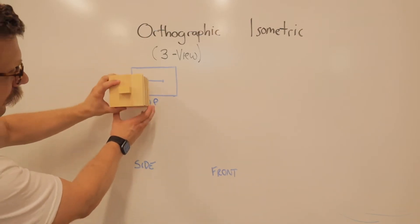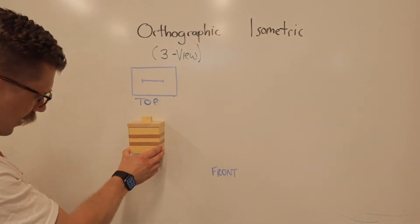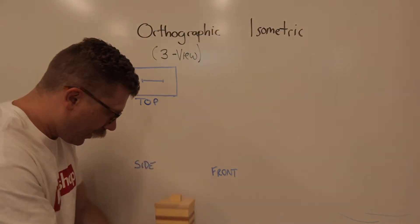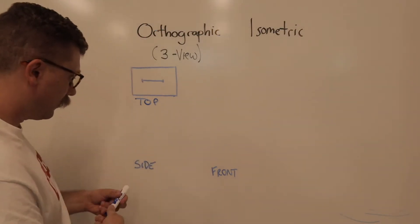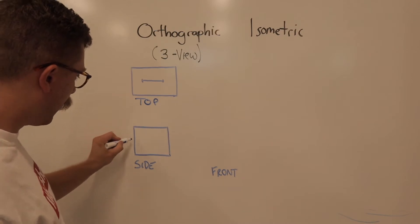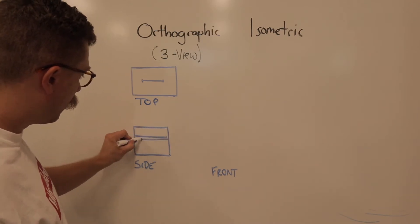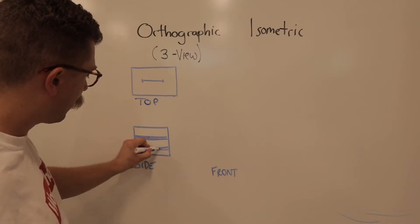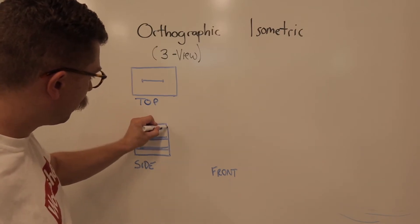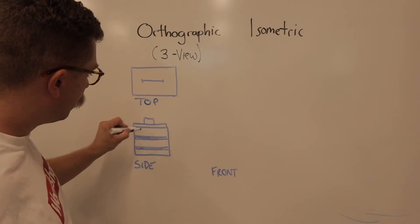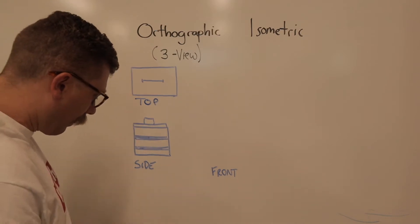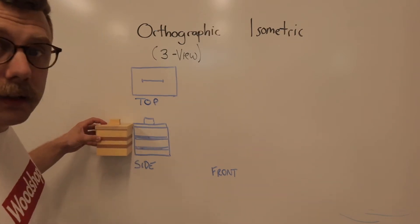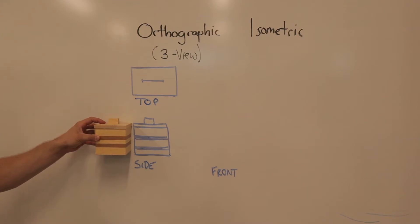Side view is if we rotate the box like that and we look at it from the side. We'll show the side. We'll show the stripes. In this case, we'll show the little lid. We'll show the little handle. And that is a side view of the box.